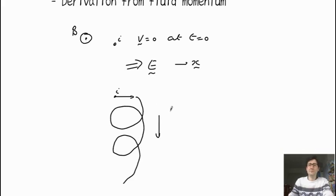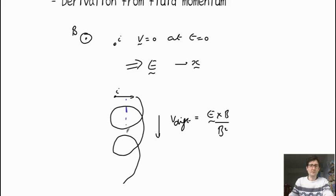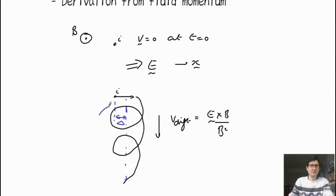The drift here is the E cross B velocity — so the drift is just E cross B over B squared. What you'll notice is that the center of this orbit is shifted from where it was originally. There's a shift delta, and that shift is the polarisation of the plasma. So when you switch on an electric field, the ions accelerate in the direction of the electric field, are deflected and undergo their normal orbits, but it's the shift which is the polarisation of the plasma.